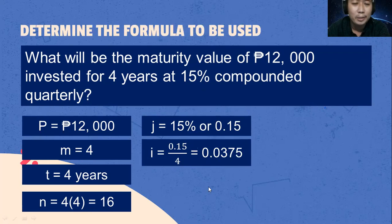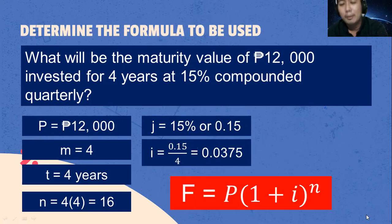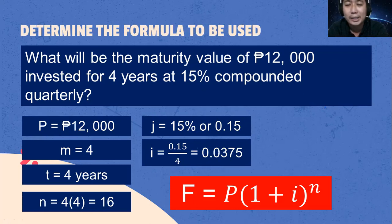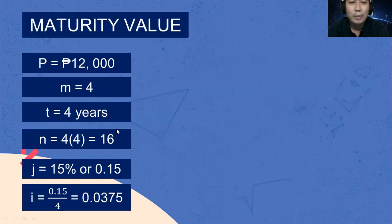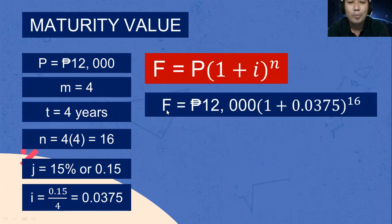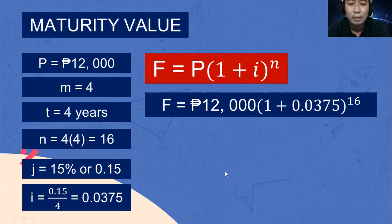Determine the formula to be used. The maturity value or final value F is equal to P multiplied by the quantity of 1 plus i raised to n. We are now going to substitute the values on the formula. Maturity value is equal to the principal amount 12,000 pesos, multiplied by the quantity of 1 plus i, that is 0.0375, raised to n, that is 16.